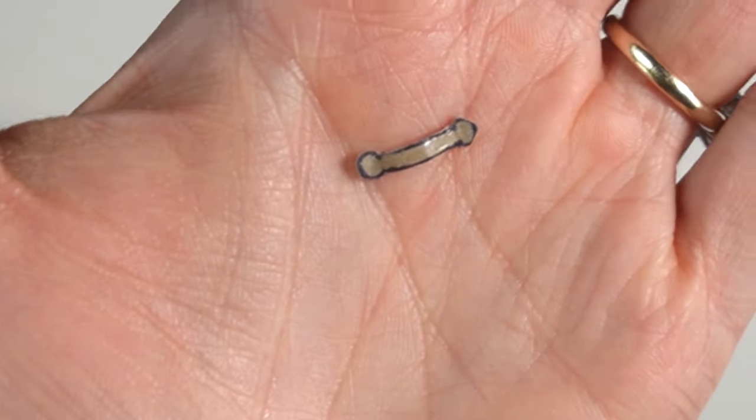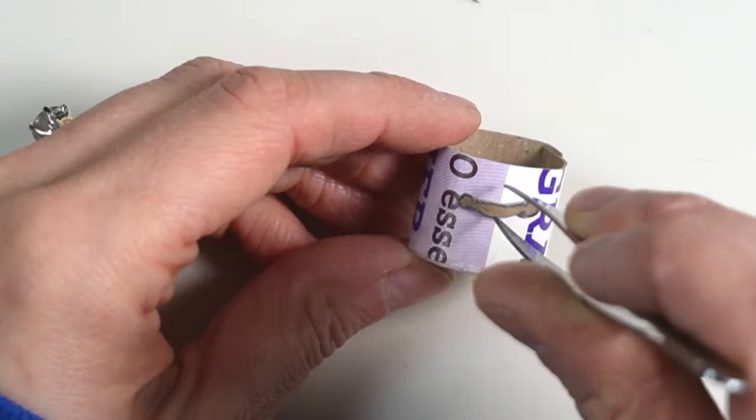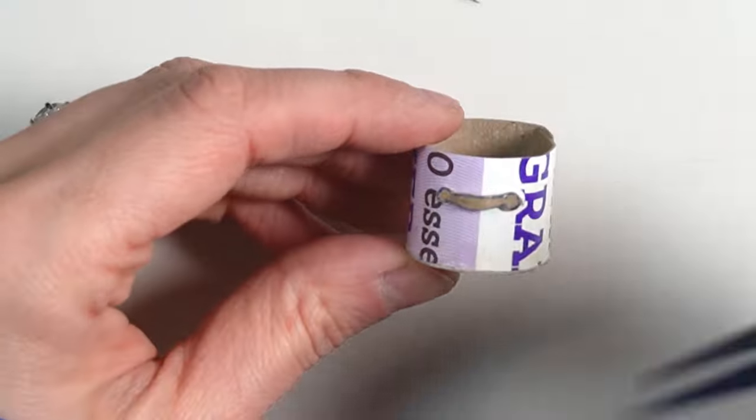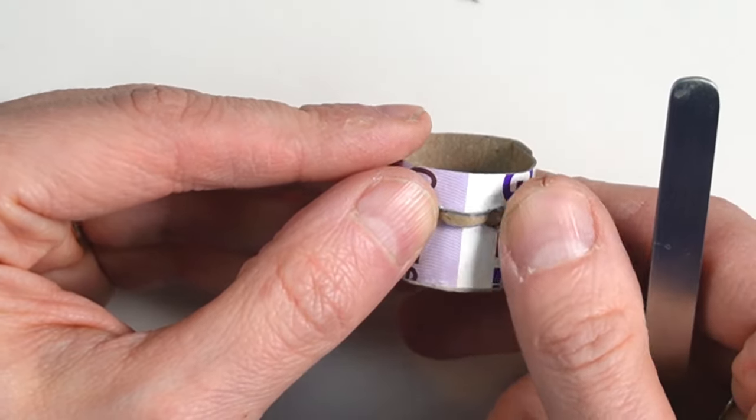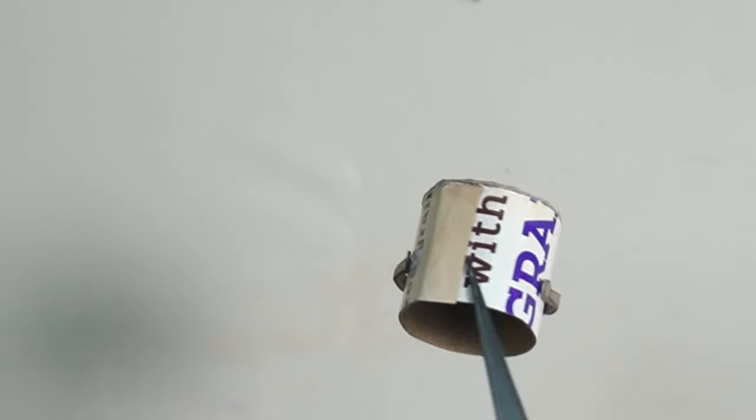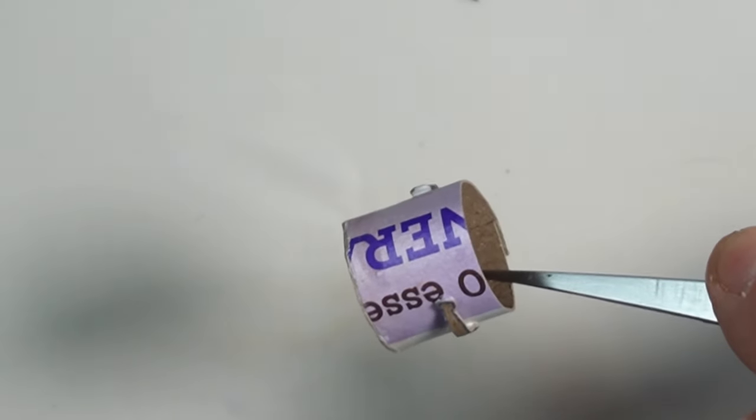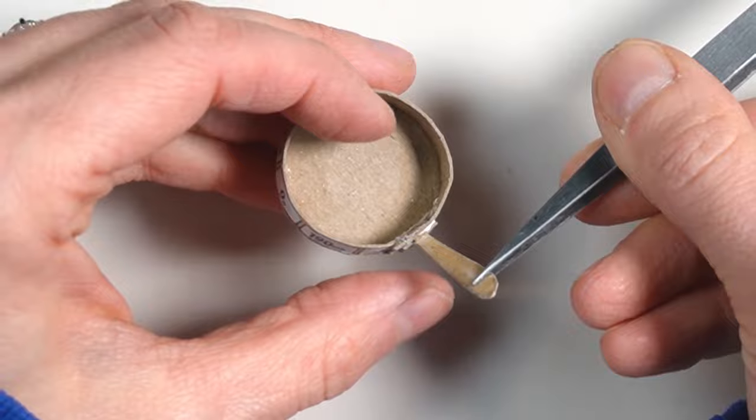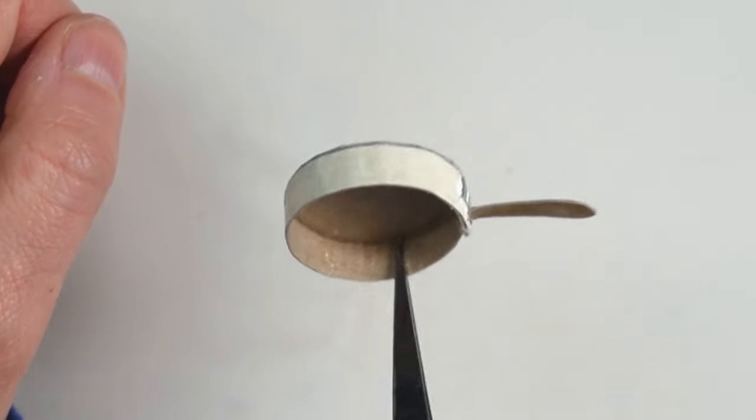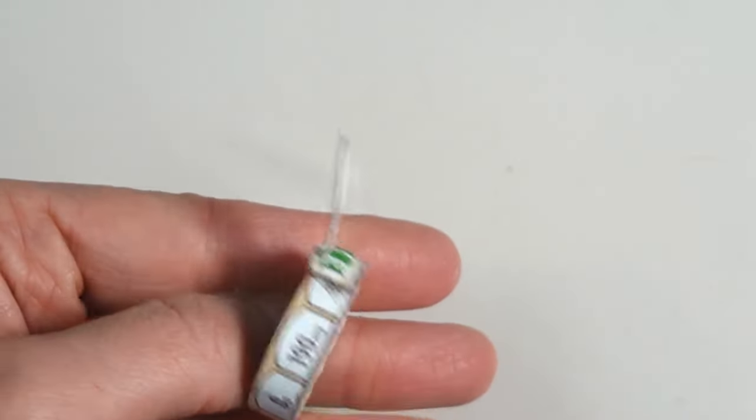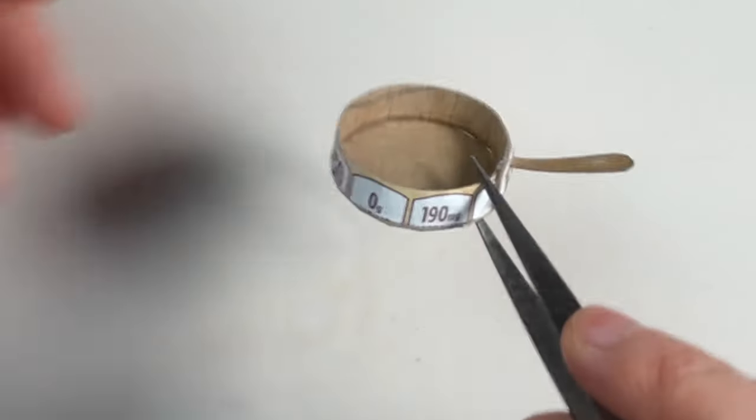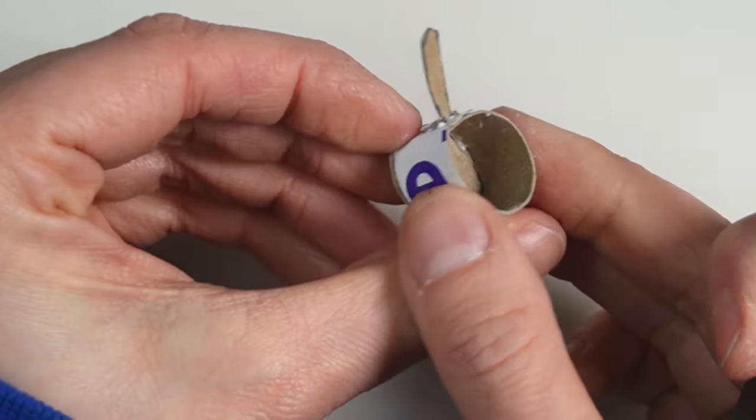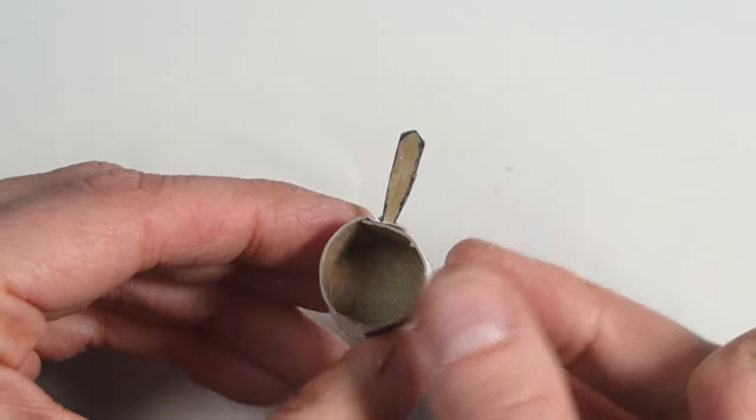Once the glue is dry on your handles you can attach them to the pot. Pay attention when you attach these because you want them to be directly across from each other and also at the same height on the pot. For the frying pan I glued the handle where the seam is. I wanted to disguise the seam a little bit and I didn't want it to fall on the side of my frying pan. I placed the saucepan handle in the same spot.